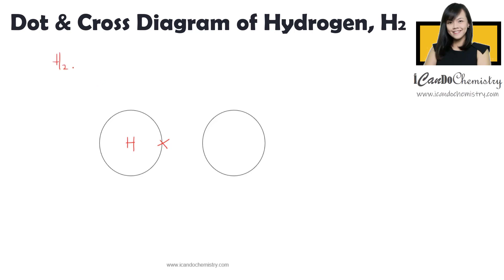Now based on the chemical formula, there are two hydrogen atoms in this molecule. For better visualization, let me draw another hydrogen and I will use dots to represent the electron for this second hydrogen.